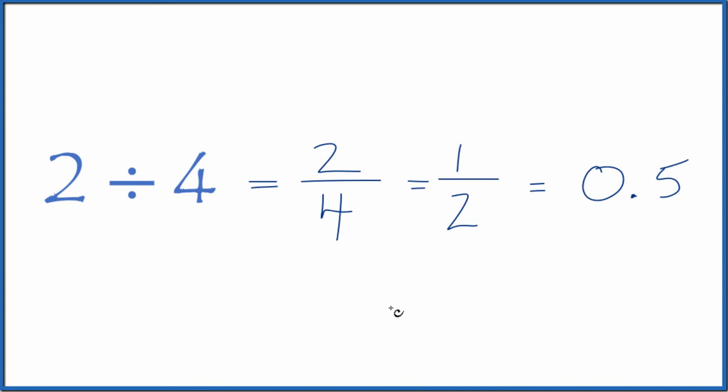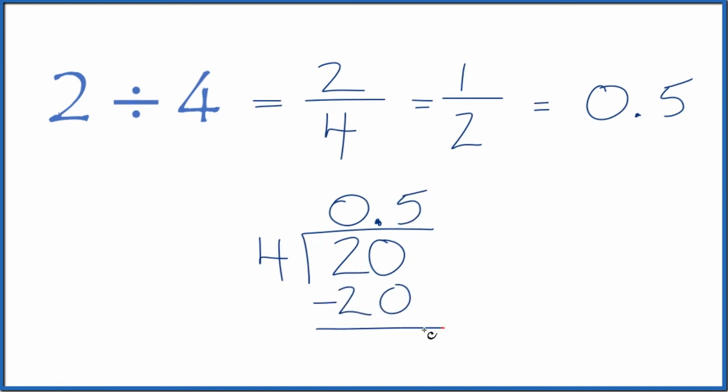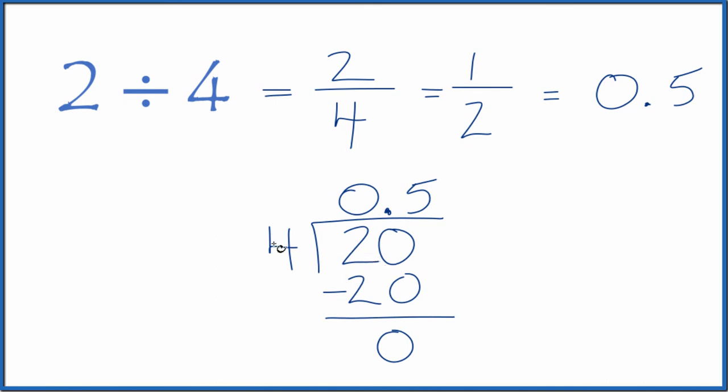We could also divide 2 by 4 longhand. We take 2, and we want to see how many times 4 goes into 2. 4 doesn't go into 2, so let's call this 20, and then we can put a zero with a point up here. Now, 5 times 4, that gives us 20. We subtract, remainder 0. 2 divided by 4 equals the decimal 0.5.